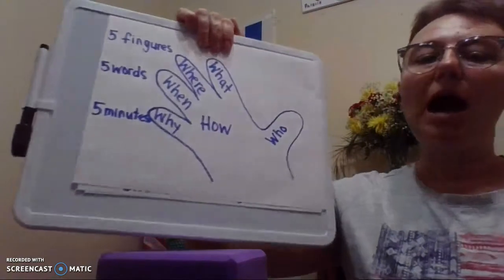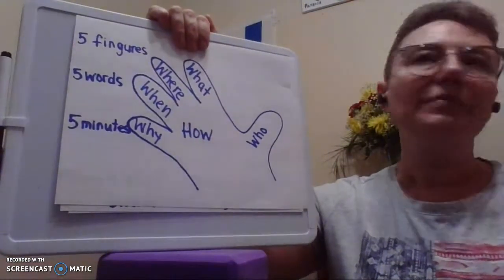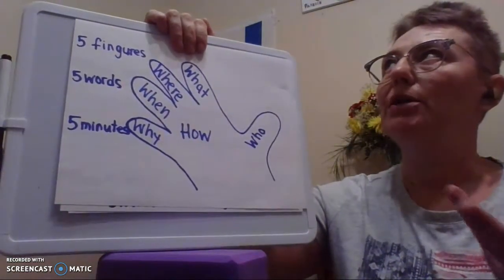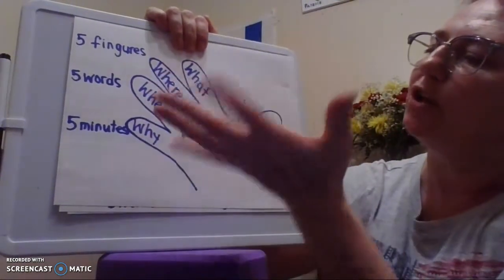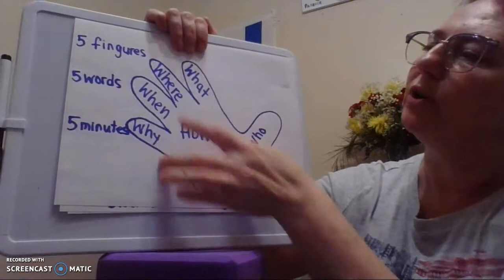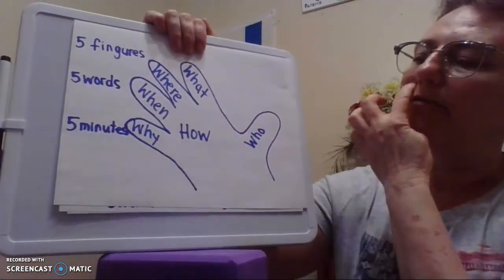So you say, how do I do this summarizing thing? As it turns out, it's pretty easy. What you're going to do is use the five fingers and five words or less in less than five minutes method. This is pretty awesome.